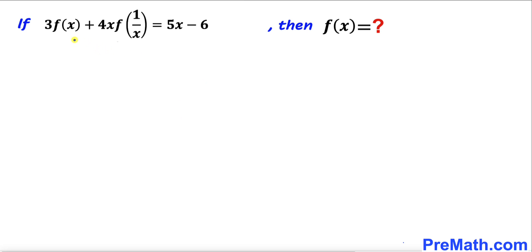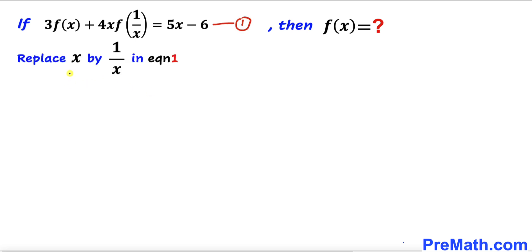So let's go ahead and get started with the solution. We want to find the value of f of x, so we are going to somehow eliminate f of 1 over x. Let me call the original equation as equation number 1. Our first step is to replace x by 1 over x in equation 1 — we usually use this trick in such functional equations.